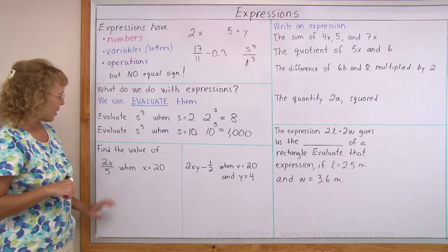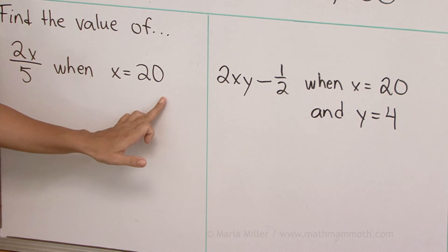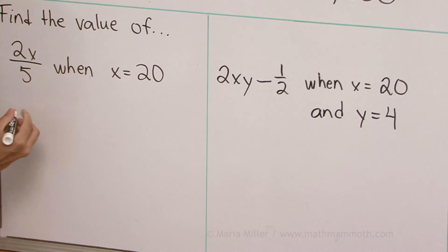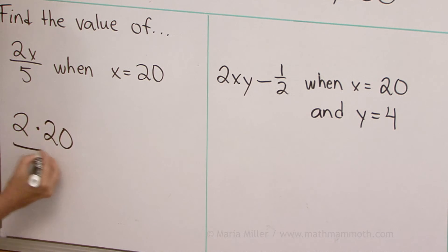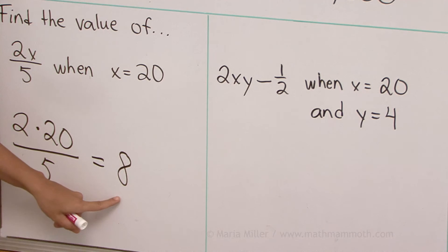Now let's practice a little. Find the value of this expression when x equals 20. This is evaluating expressions — finding its value. All I do is take 20 and put it here in place of x. So I get 2 times 20 divided by 5. Notice here is a multiplication — it's not 220, it is 2 times 20, divided by 5. We get 40 divided by 5, and that equals 8. So the value is 8.